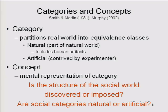The first question is: what's the relationship between the actual structure of the social world and the structure of the social world we represent in our heads? Do we discover the categories that exist in the social world, or do we somehow impose that category structure because we bring more or less pre-existing categories to our perception of the world? And the second question is just how natural are social categories? Some social categories really do seem to exist in the external world, but others not so much — they don't have that quality.